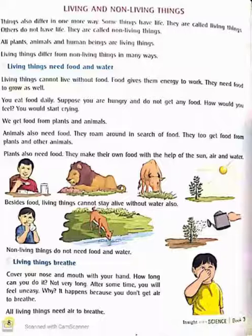Plants also need food, but they do not eat other living things to get their food. They make their own food with the help of sun, air, and water. Now besides food, living things cannot stay alive without water also. But non-living things do not need food and water.